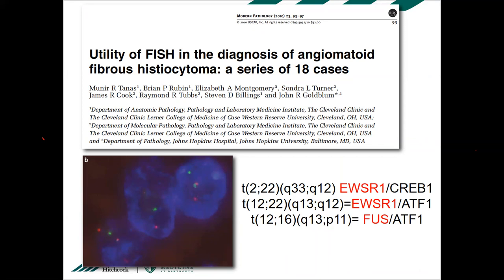We now know the pathogenesis of the great majority of AFH: most have EWSR1-CREB1 fusion. EWSR1 is a promiscuous gene, so this is not specific, but it is very helpful in the right context. Molecular pathology cannot survive alone for diagnostic purposes — predictive purposes are different. The same fusions in different tumors can produce completely different natural behaviors. Less commonly, EWSR1-ATF1 fusions are seen — also found in clear cell sarcoma, but AFH has nothing to do with clear cell sarcoma.